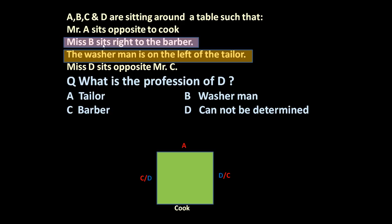Let us go back again to the second statement. Miss B, because now A is here, C and D here, so obviously B will be here. B is a cook. This much is confirmed. Miss B sits right to the barber. B is here and B is right to the barber. It means barber is here. This is the right side of the barber. B is towards the right of the barber.